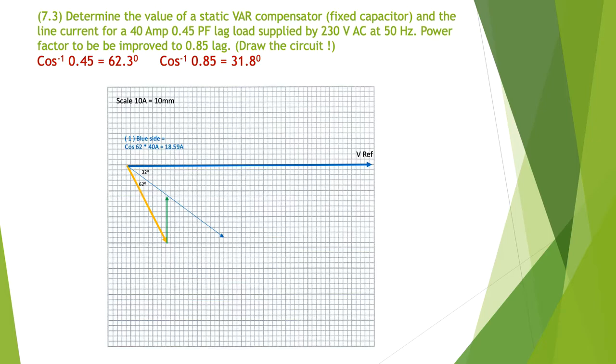Next step is to put in the current required. I'm calculating the blue side of the triangle: cosine of 62 degrees times 40 amps equals 18.59 amps. I need to calculate the black and red sides of my triangle.